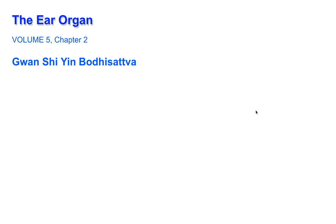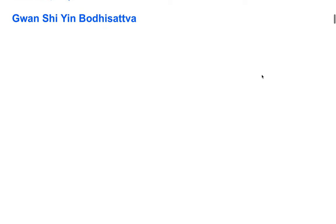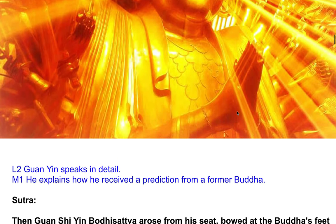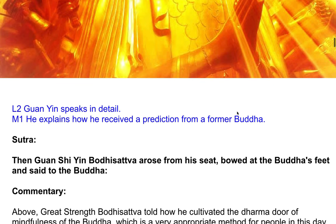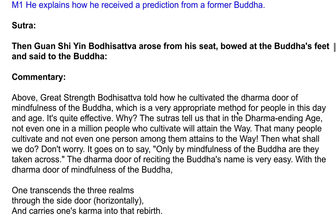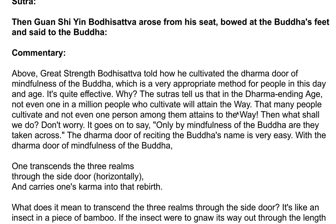This is the best Dhamma door — the ear organ, volume five, chapter two, Kwan Shri Yin Bodhisattva. Then Kwan Shri Yin Bodhisattva arose from his seat, bowed at the Buddha's feet, and said to the Buddha. Commentary: Above, Great Strength Bodhisattva told how he cultivated the Dhamma door of mindfulness of the Buddha, which is a very appropriate method for people in this day and age. It's quite effective.